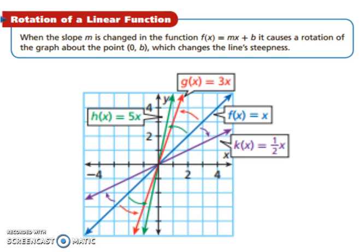Now let's look at rotation. Rotation of a linear function is when the slope m is changed in the function. So we just talked about, it's like the same as y = mx + b. Well, if you change the slope, it's going to make the graph steeper or less steep.